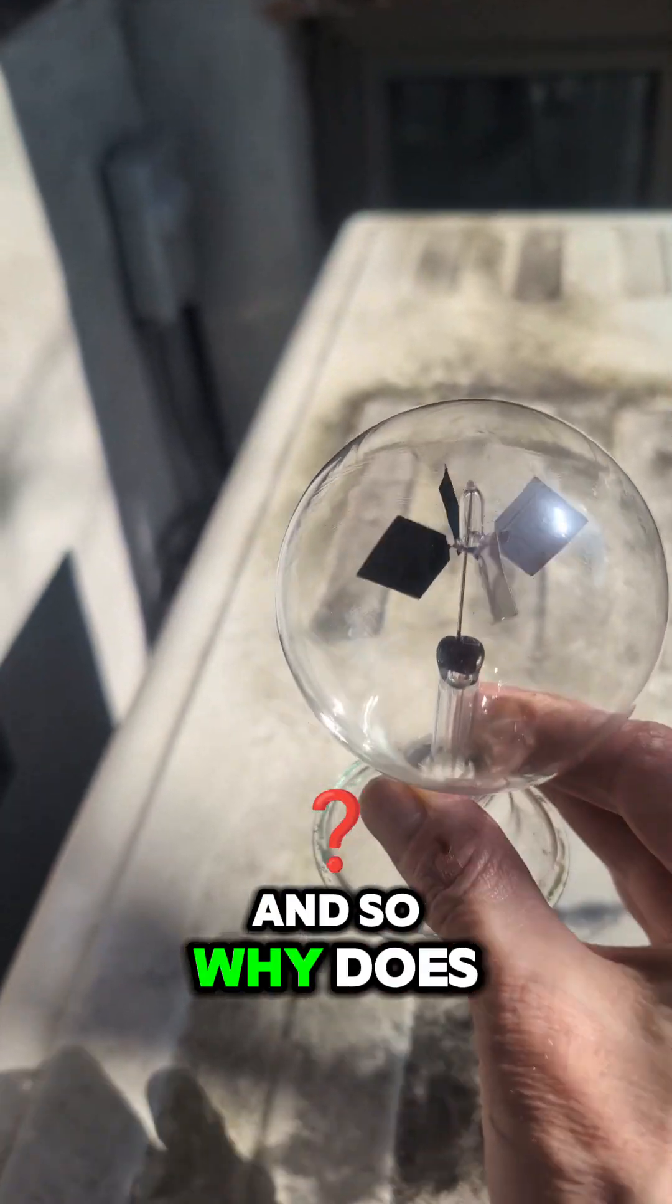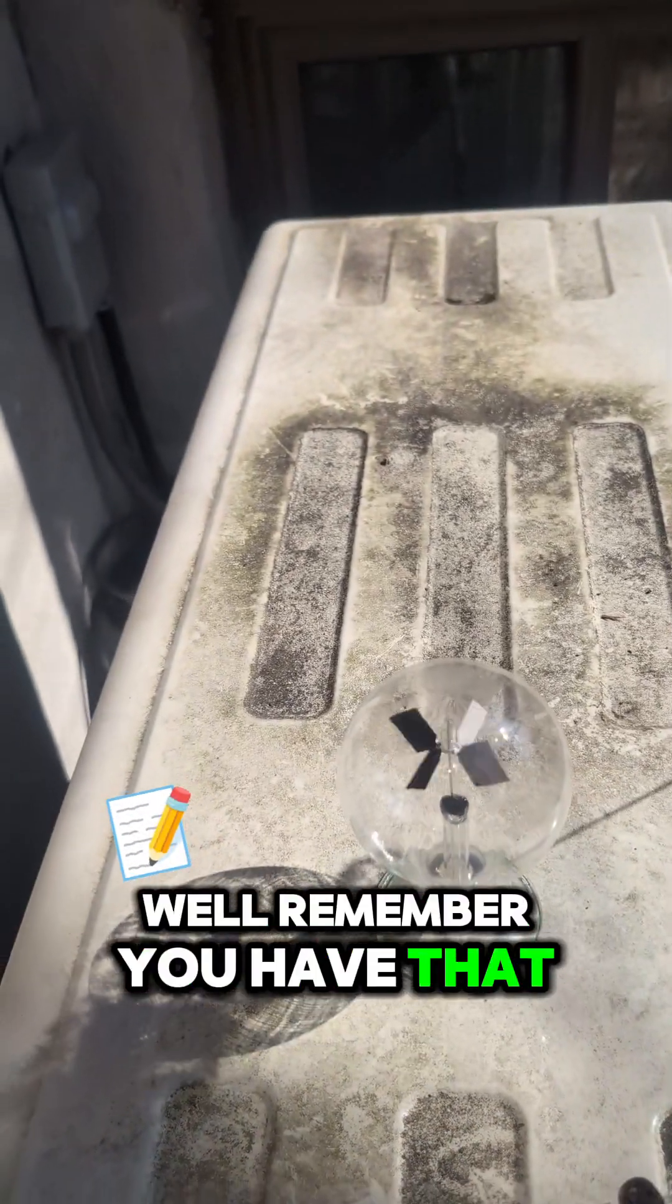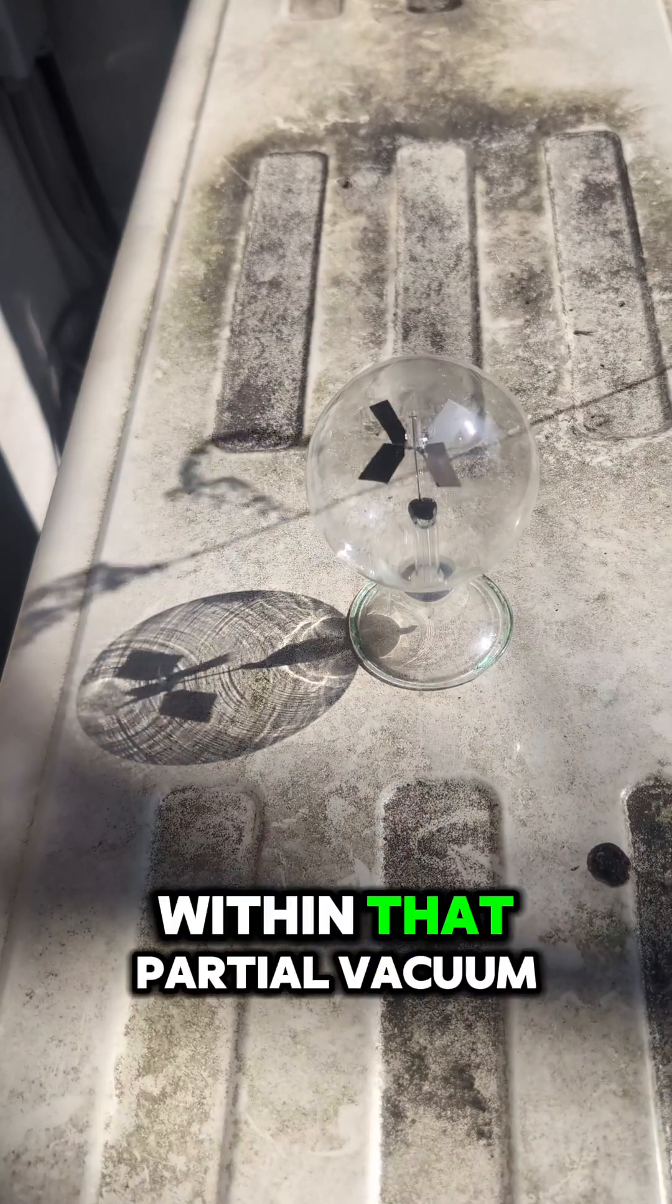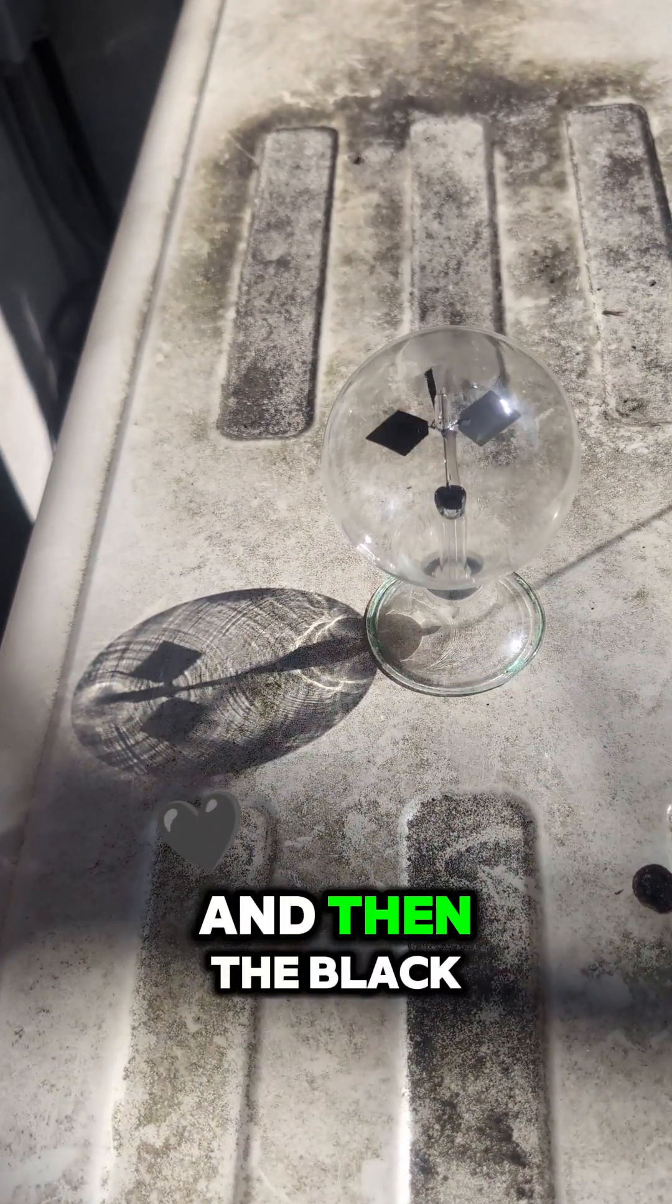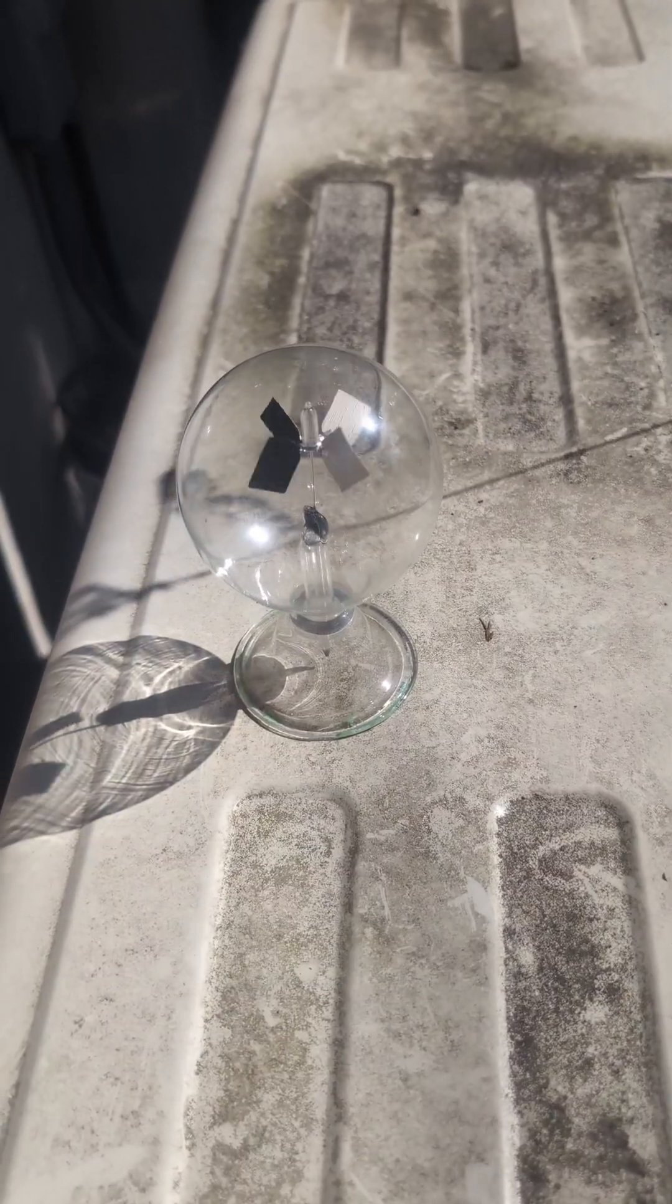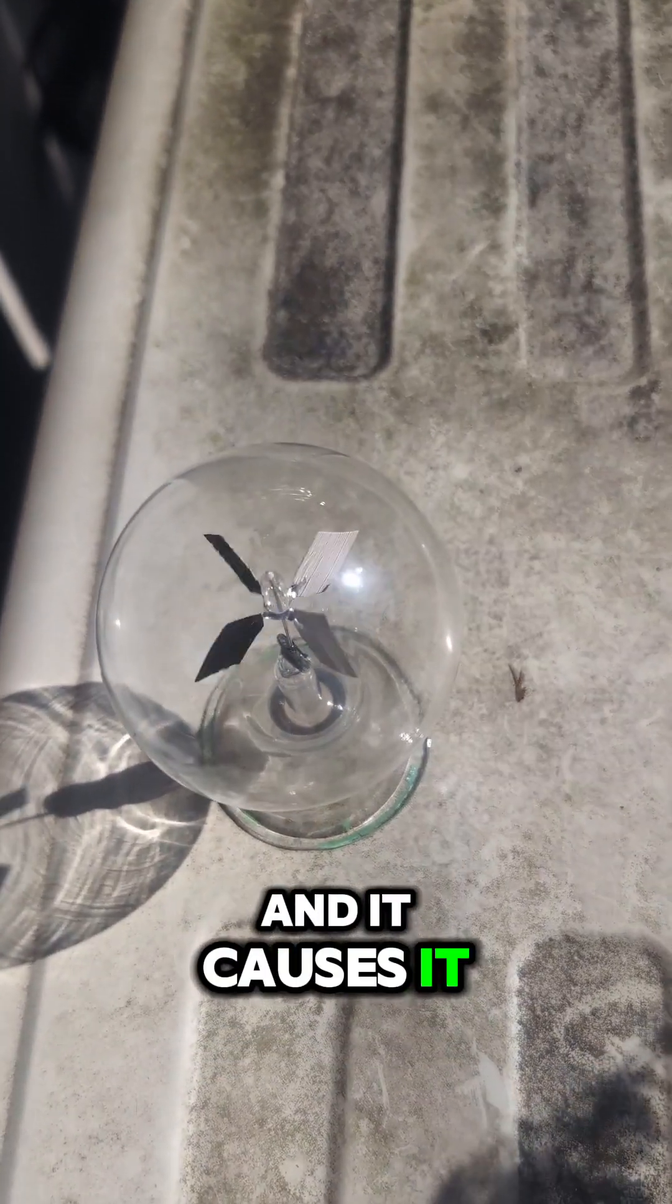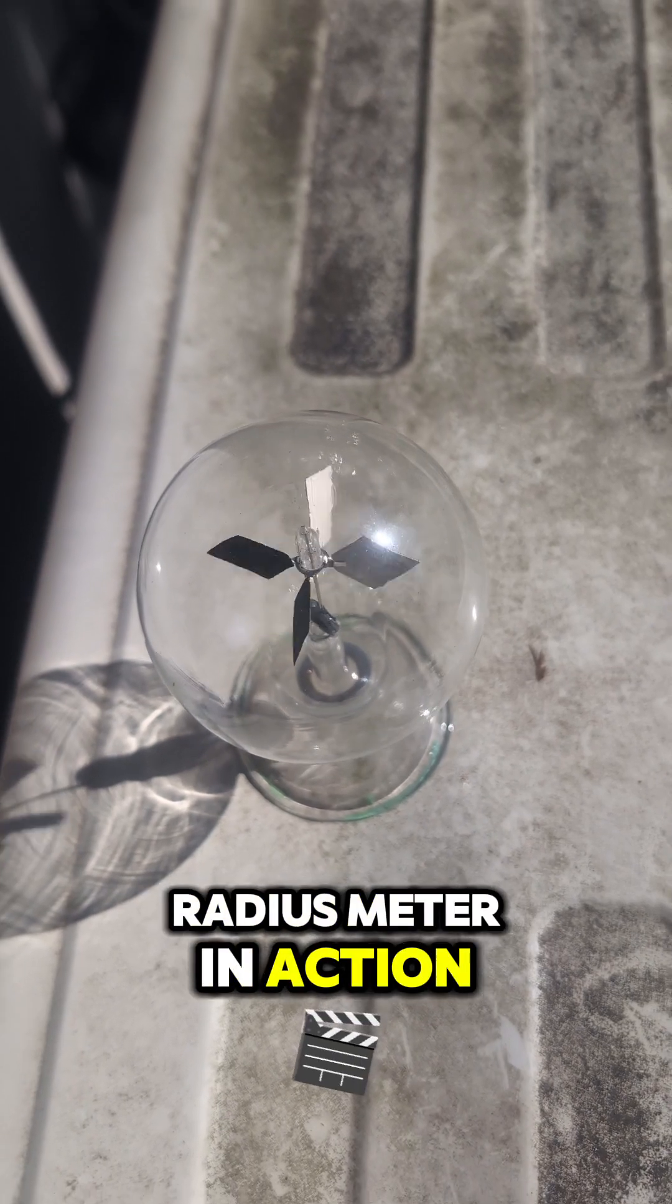And so why does it spin? Well, remember, you have that perfect amount of gas within that partial vacuum, and then the black surface gets hotter than the white surface and causes that gas to expand, and that pushes the black surface away, and it causes it to spin. And that's your Crookes radiometer in action.